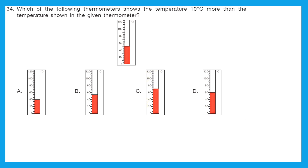Question 34: Which thermometer shows a temperature 10 degrees Celsius more than the temperature shown in the given thermometer? First we find the temperature on the given thermometer: 0, 10, 20, 30, 40, 50 — the line stops at 50°C. Adding 10 gives 60°C. From options A, B, C, and D, we find the thermometer showing 60°C — the correct option is option D.